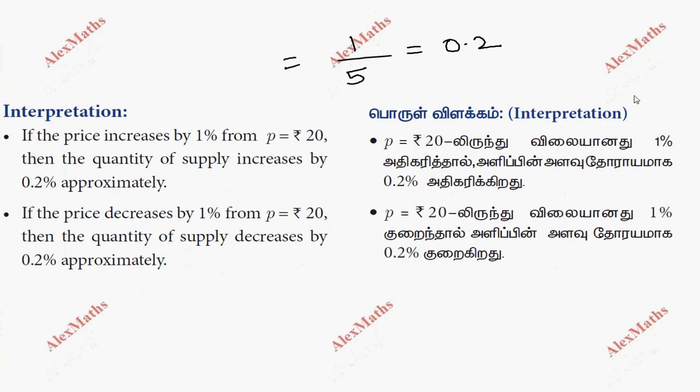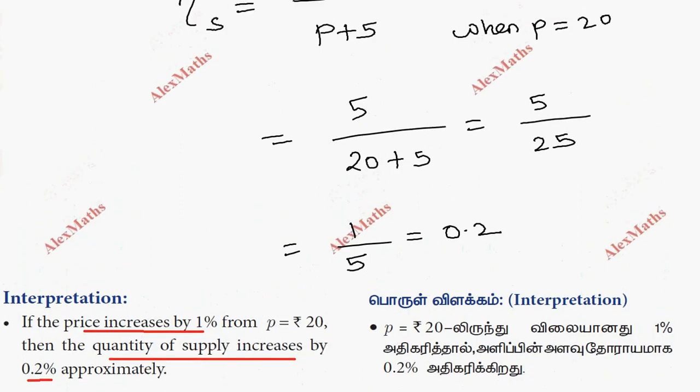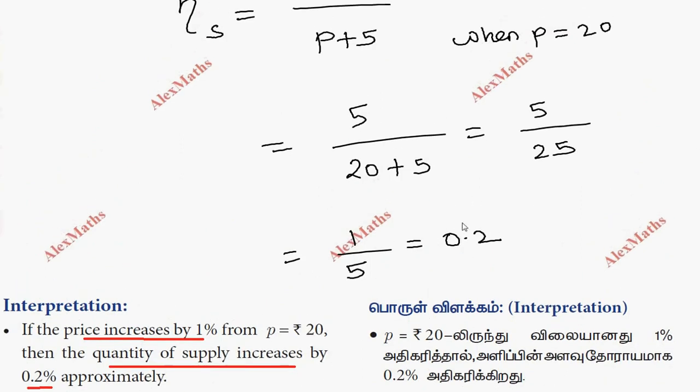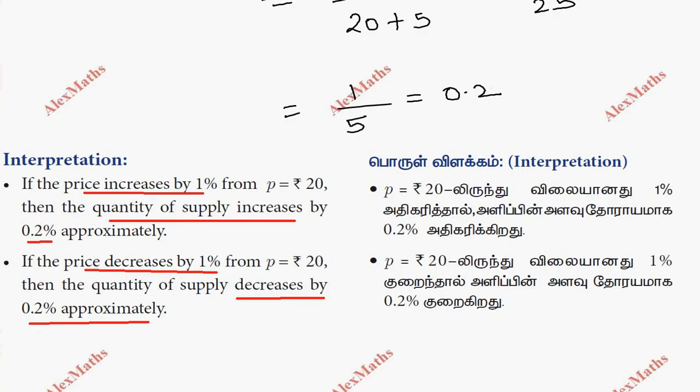Interpretation: if the price increases by 1% from p equals 20, then the quantity of supply increases by 0.2%. If the price decreases by 1%, then 0.2% is decreased. This 0.2 is the elasticity of supply value.